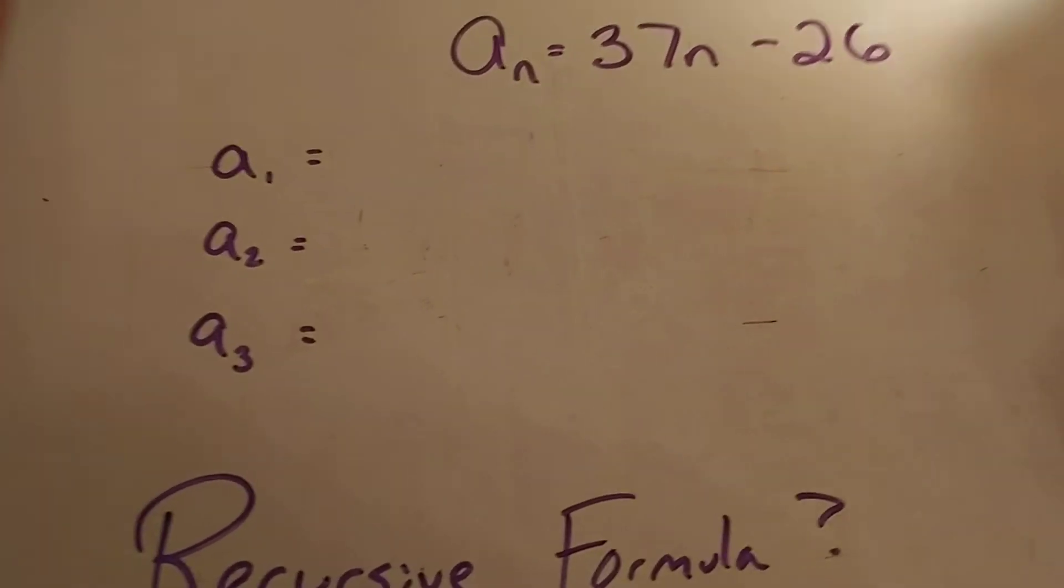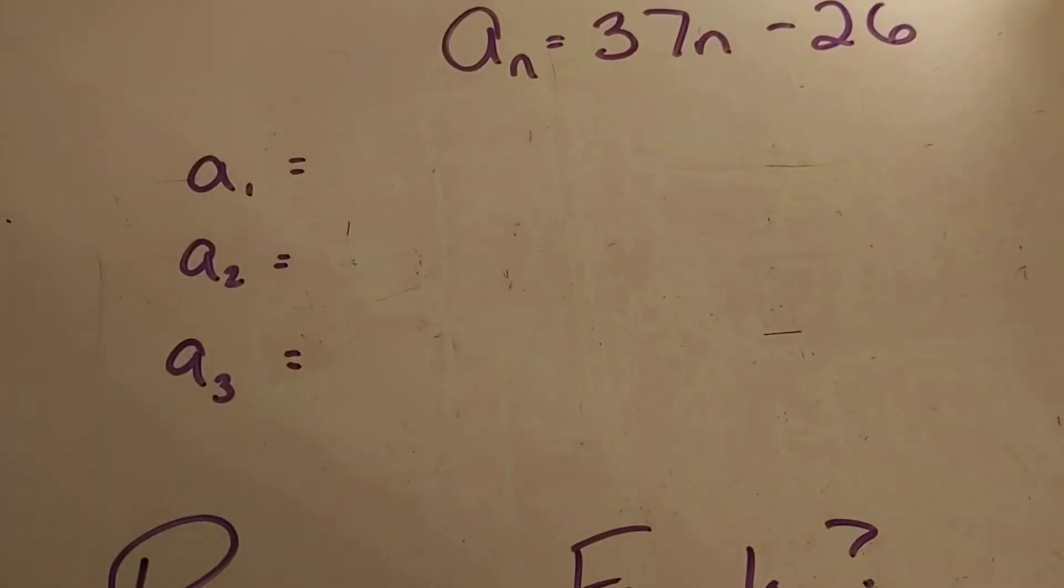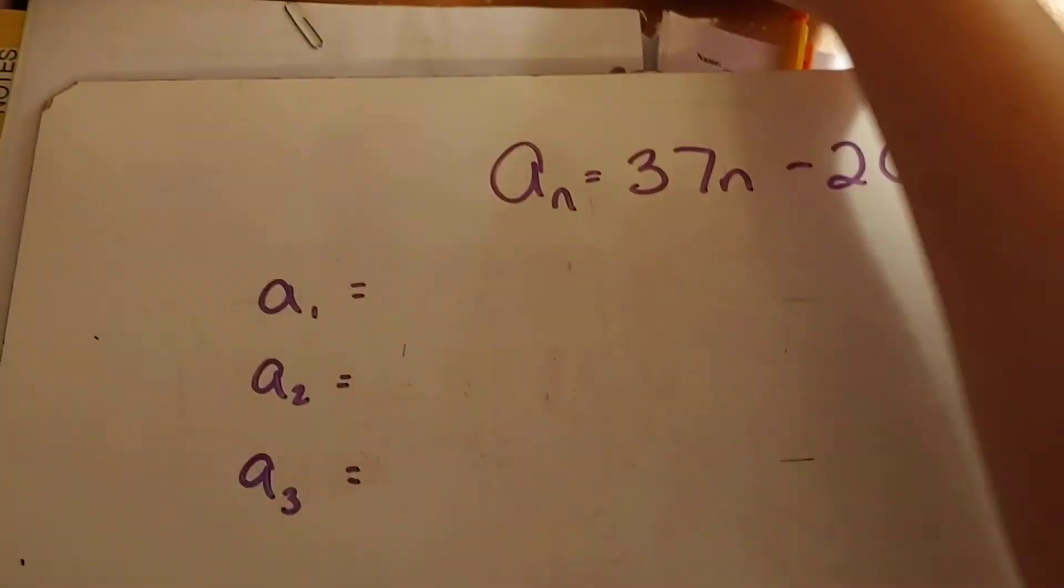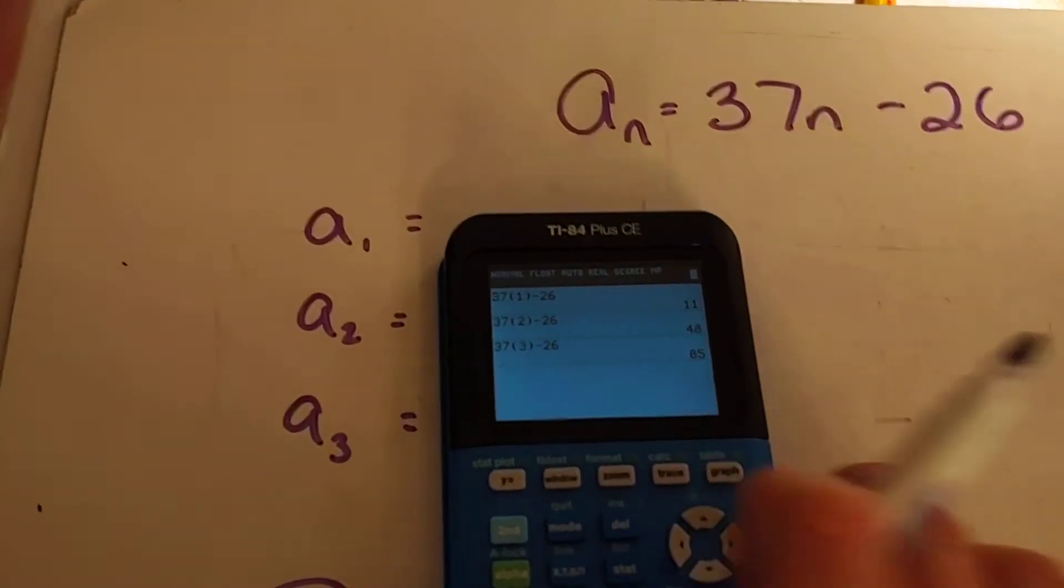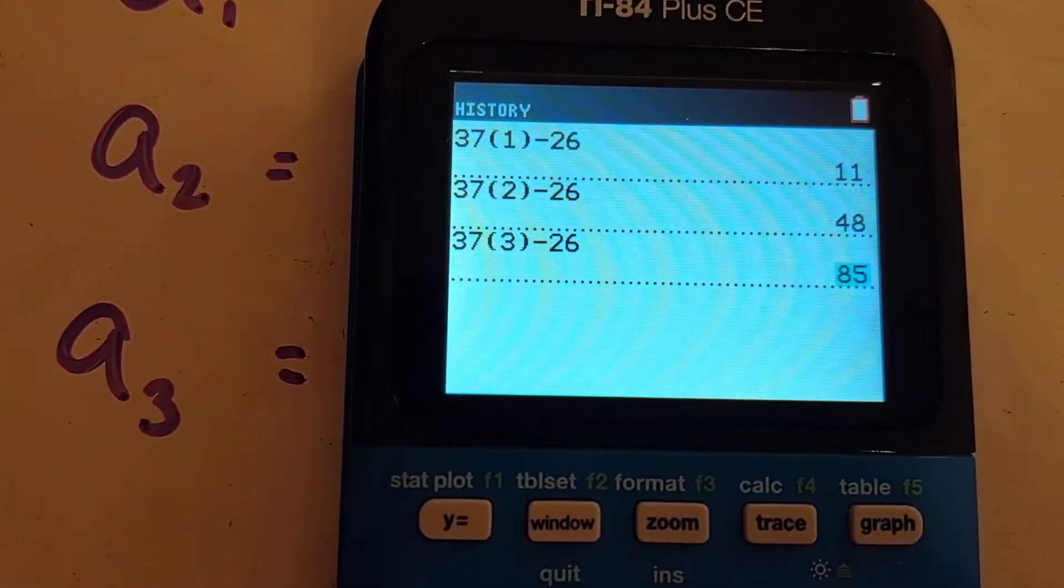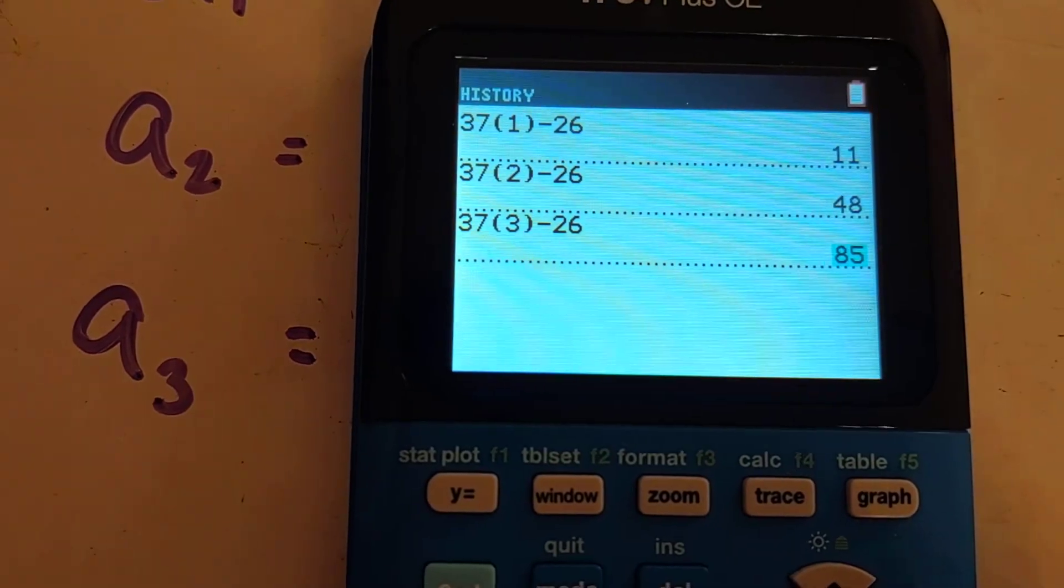Alright, so if I want to find my first, second, and third terms, all I have to do is plug in 1 for n, then plug in 2 for n, and then plug in 3 for n. So I went ahead and did that on my calculator, which you can see right here. If I plug in 1 for n, 2 for n, and then 3 for n, I'm going to get 11, 48, and 85.